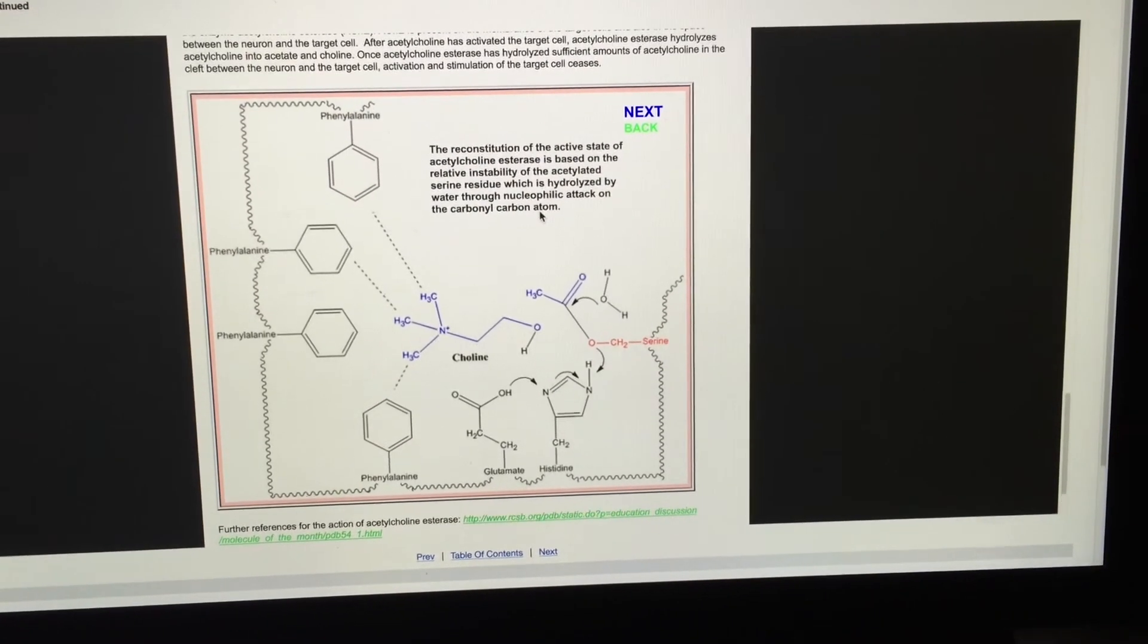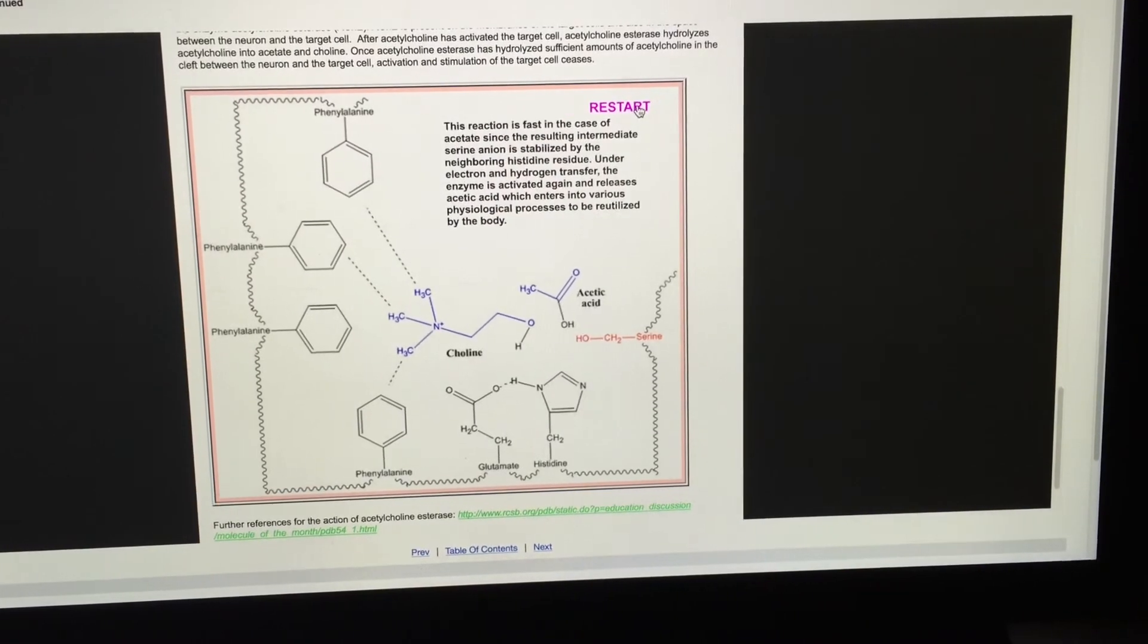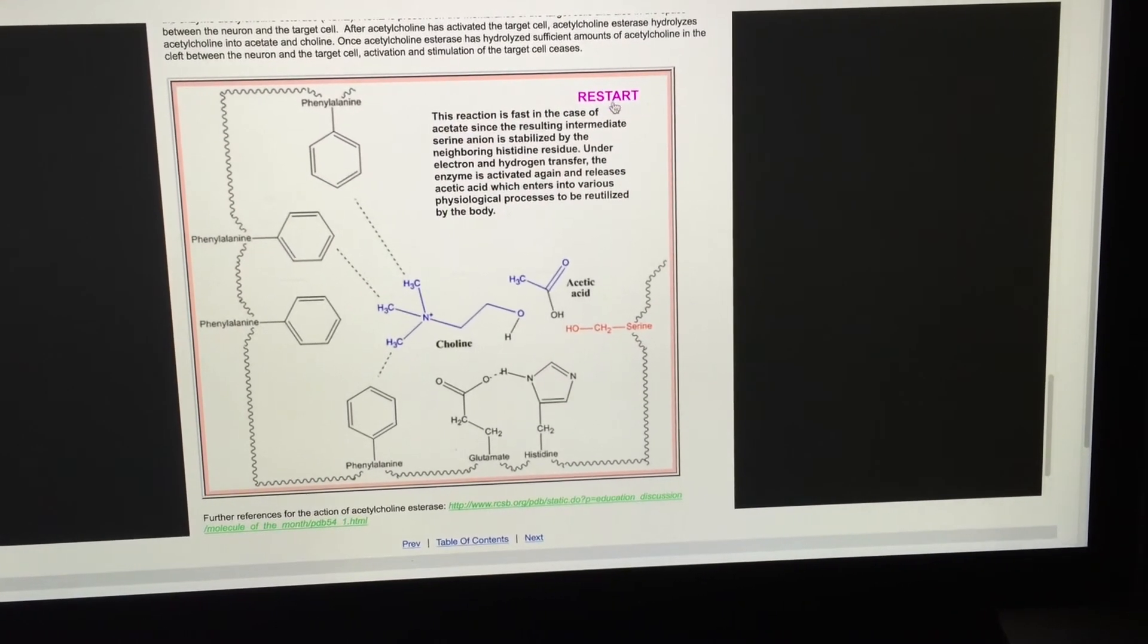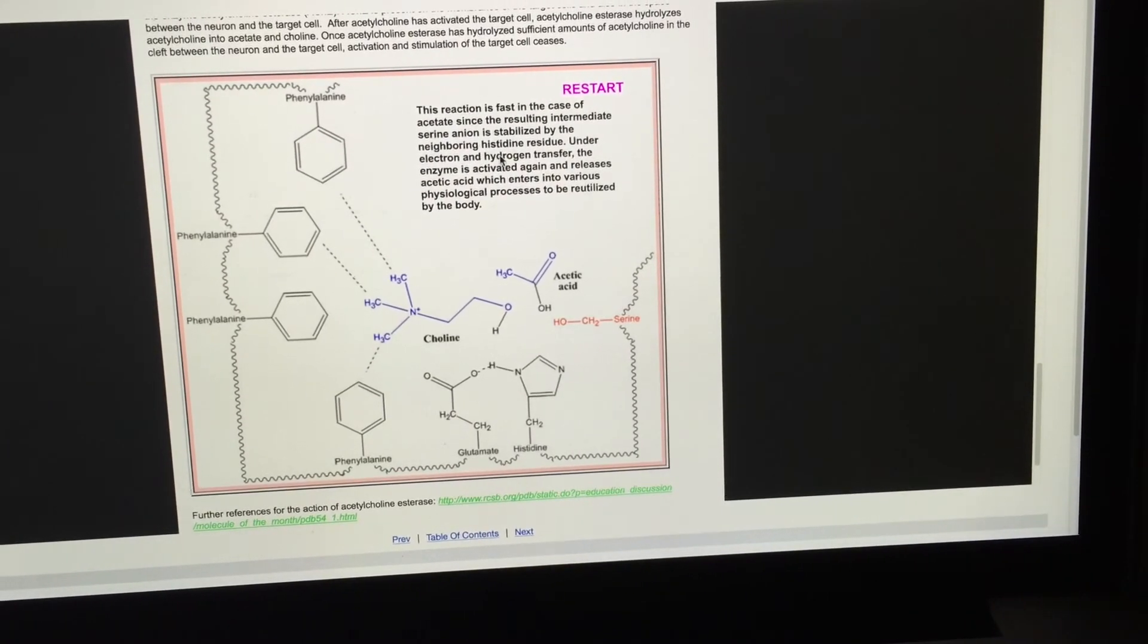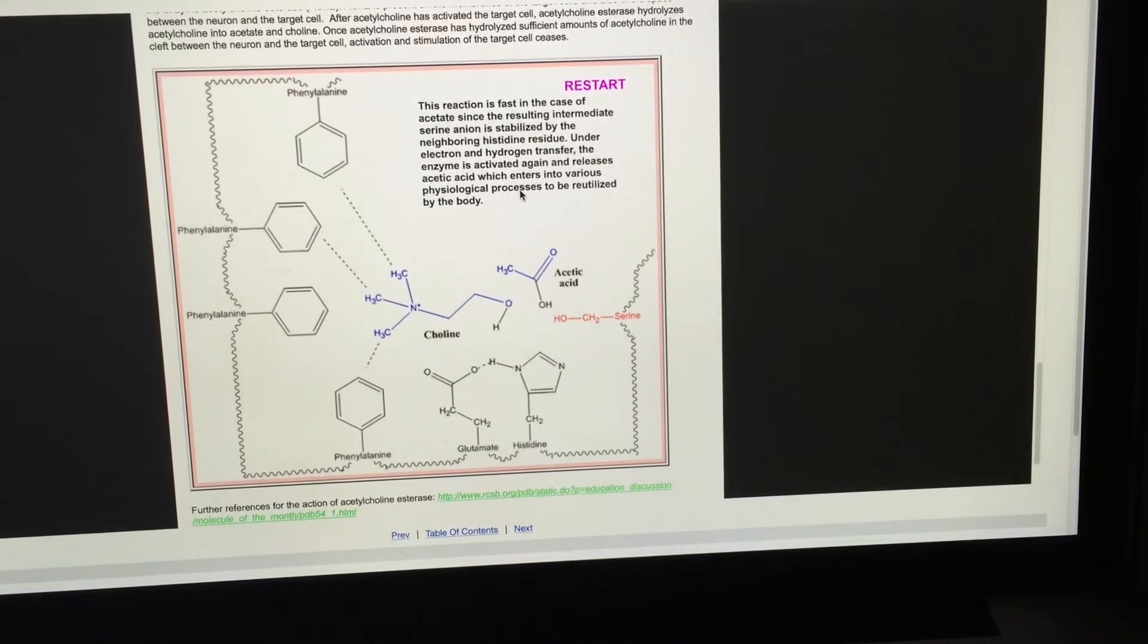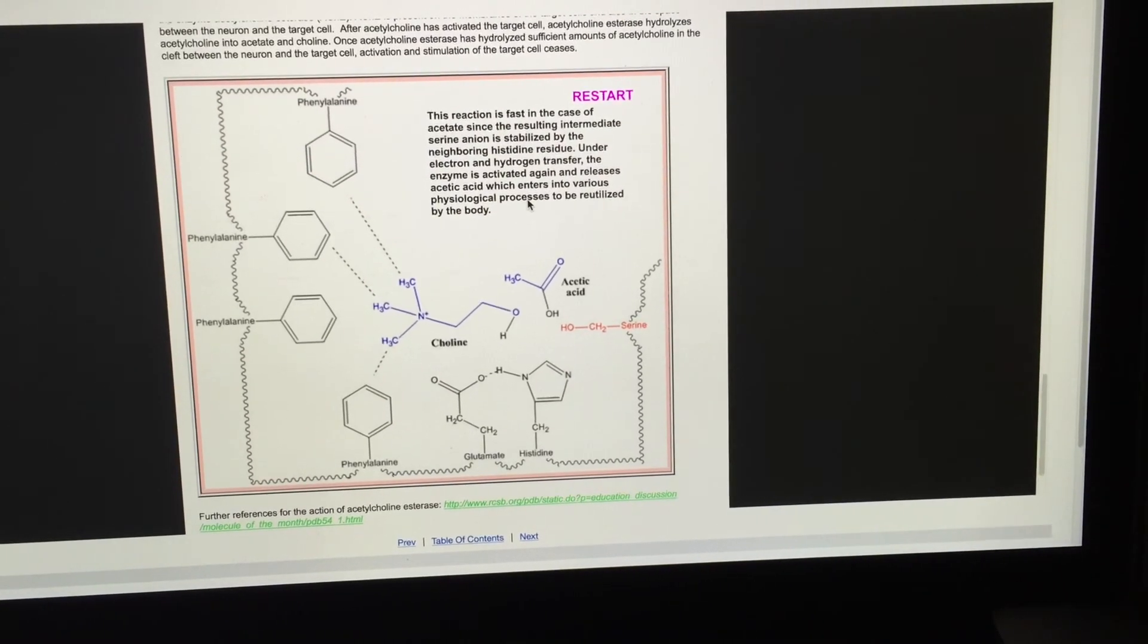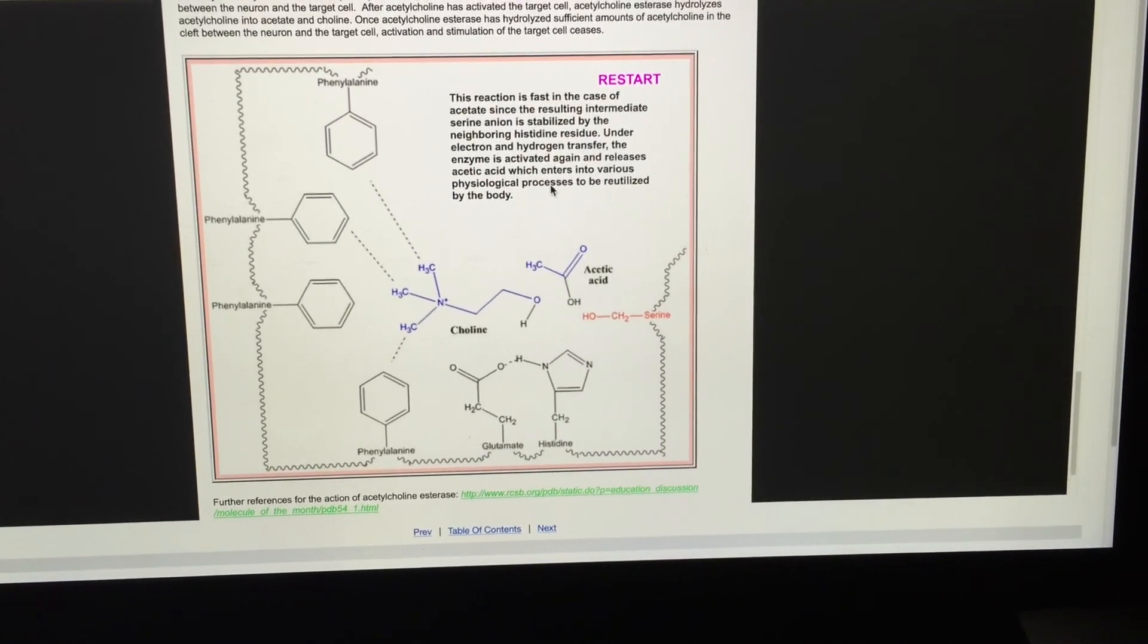The bond between the acetyl group and the serine group is relatively unstable and has a natural propensity to degrade. It's this natural propensity for the degradation of that bond that allows the acetylated group to leave naturally.